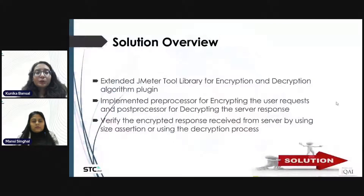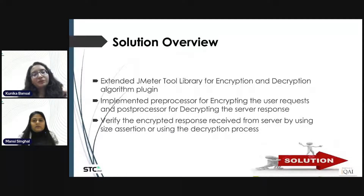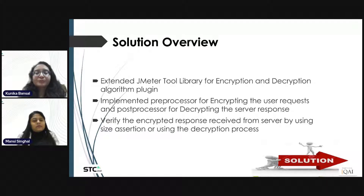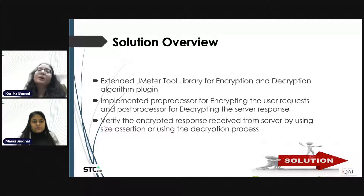In order to achieve the goal, we did a lot of brainstorming sessions with our team and tried different logics and JMeter functions. After a number of such sessions, we got a solution by implementing AES algorithm logic in a preprocessor to encrypt the user request and a post processor to decrypt the response. Finally, we verify the server response using assertions. We will explain each and every step of this solution in detail in the upcoming slides.